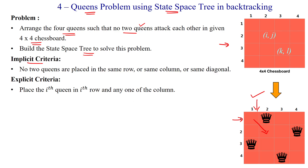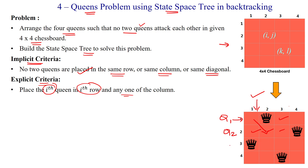Based on that, we have implicit criteria: no two queens can be placed in the same row, no two queens can be placed in the same column, and no two queens can be placed in the same diagonal. The explicit criteria is that the i-th queen has to be placed in the i-th row but in any one of the columns of that row. Queen 1 must be in row 1 with four column options, queen 2 in row 2, queen 3 in row 3, and queen 4 in row 4. This is called explicit criteria.